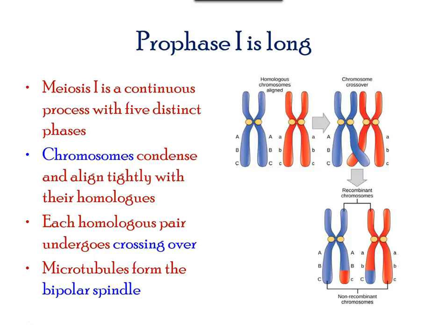Meiosis I has the same five distinct phases as mitosis; however, chromosome activity is different. Homologous chromosomes pair up and segments are exchanged via a process called crossing over. You can see that the blue chromosome has a segment of red in it, and the chromosome that was the red pair has a piece of blue within. This is called a recombinant chromosome.